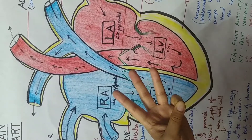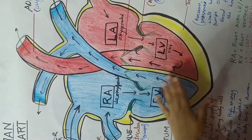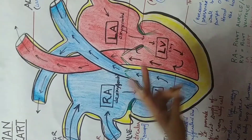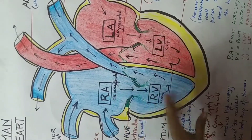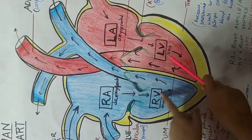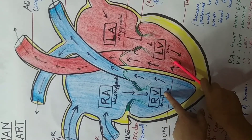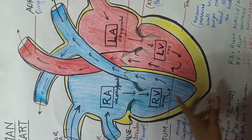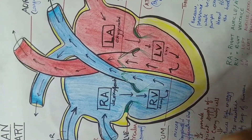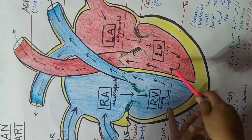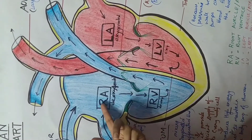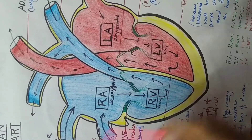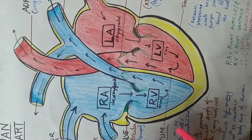So the three steps are: first, all four chambers relax; second, both upper chambers contract; third, both ventricles contract. Then the cycle restarts with relaxation of all four chambers, followed by upper chambers contracting, then lower chambers contracting. This cycle goes on continuously.